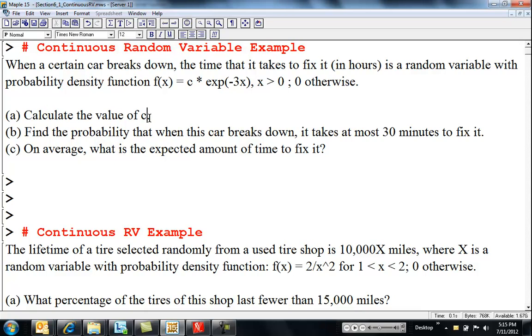So these are, this is chapter six. We are switching to continuous random variables. Continuous random variables are defined over a support of all, of like real numbers.